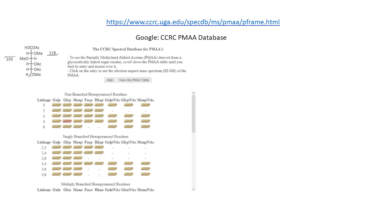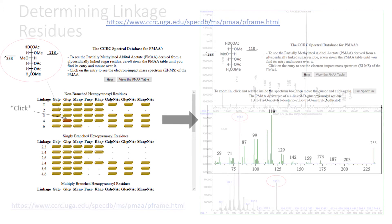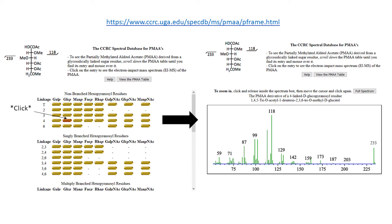The valuable resource is the link shown on the screen right now which will take you to the CCRC website where we have a PMAA database. On this website, we can hover over and look at the four-linked glucopyranosyl residue and see the common fragmentations. We can see that the residue has similar fragments as the one observed in our mass spectrum. We can also click on that button to get an example of a spectrum.